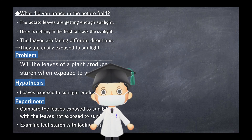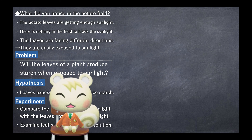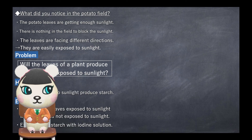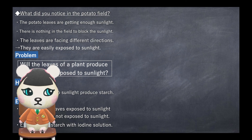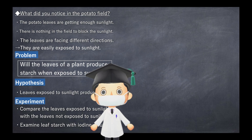How about wrapping it in aluminum foil to block sunlight? But with that alone, we don't know if the leaves already contain starch before being exposed to sunlight. So it's a good idea to make sure there's no starch before the sun is shining, and then compare the sunlit and non-sunlit leaves.